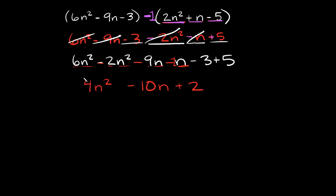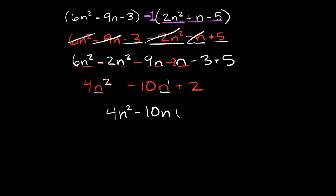Is there anything else we can combine together? No — you might be thinking we have an n here and an n here, but in order to combine like terms they have to have the same variable AND the same exponent. This one has a 2, this one has a 1, so you cannot combine those.